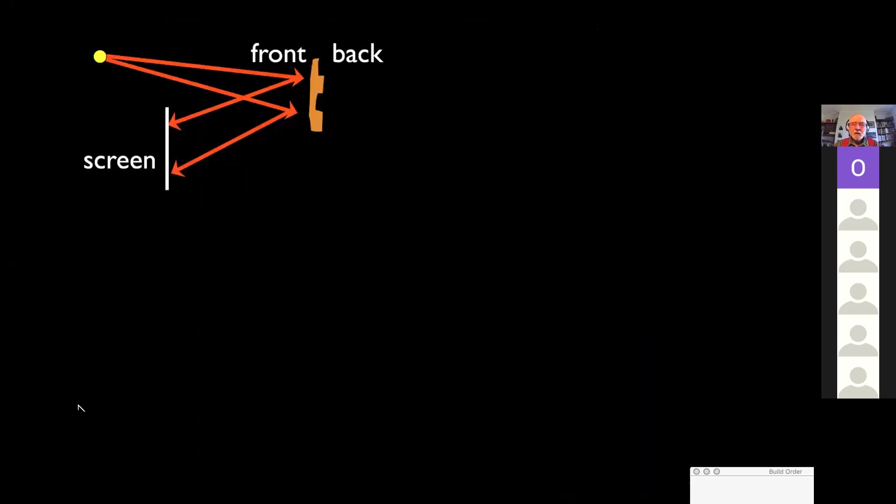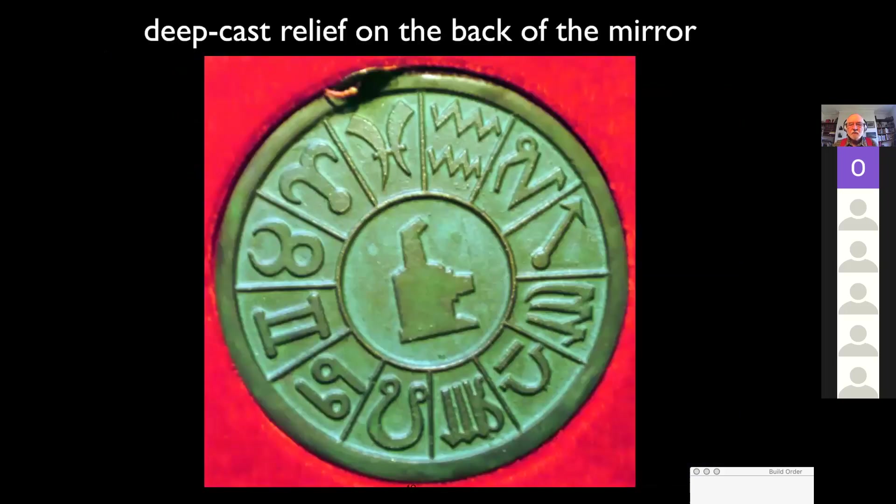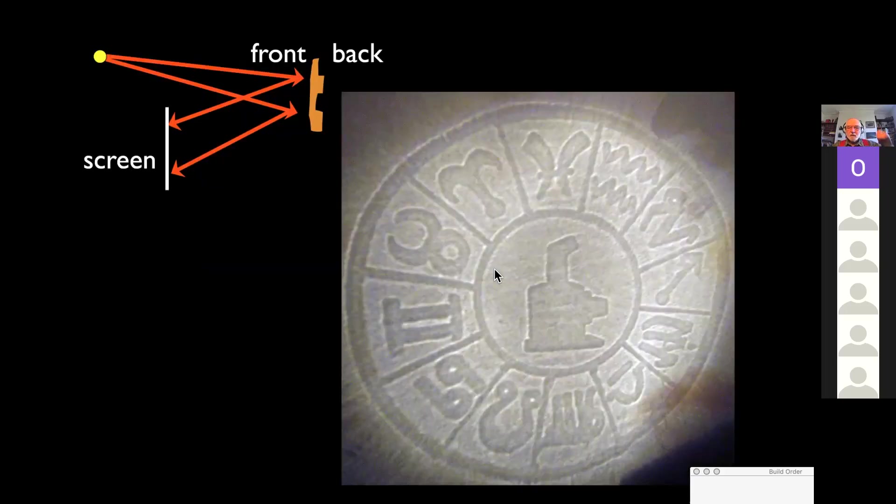Now, why they're called magic is because of this property. If instead of looking at the mirror, looking at your face in the mirror, you look at the reflection of a distant object, let's say the sun or a source of light, on a screen, you expect to see a disk of bright light. But what you don't expect to see is a ghostly image of the pattern that's on the back of the mirror. Very strange. Here's the mirror, and here's the pattern that you see reflected. And this was very puzzling. It's why they're called magic.